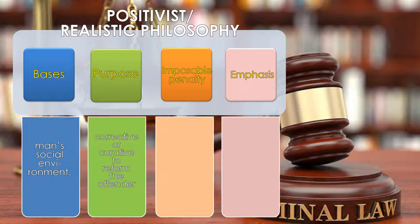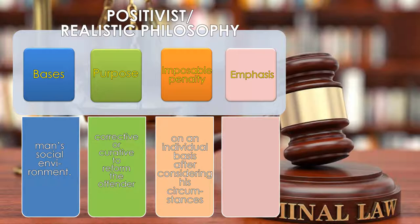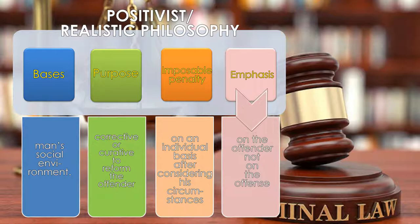The determination of penalty is on an individual basis after considering the offender's circumstances. The determination is done on a case-to-case basis individually, after the individual has been examined by a group of scientists, which does not include a lawyer, because they do not want the law to be taken into consideration in the imposition of penalty. In positivist philosophy, the emphasis of the law is on the offender, not on the offense — on the criminal, not on the crime. There is great regard for the human element of the crime, and it must be taken into consideration why the offender committed the crime.